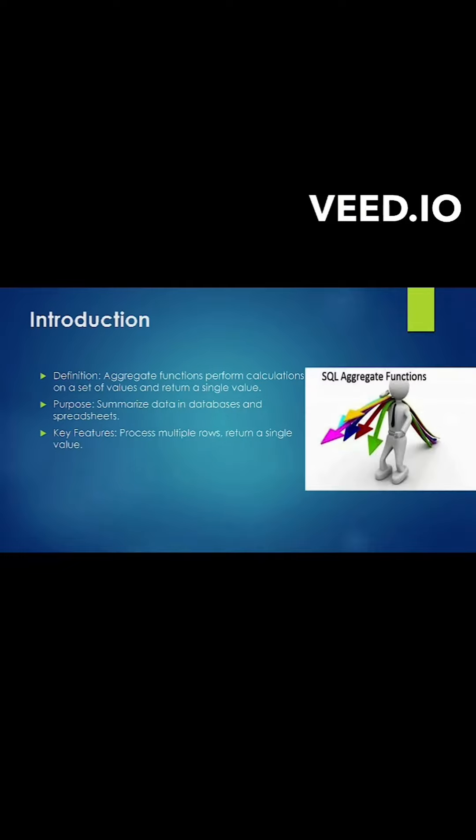Please find the definition of aggregate function. An aggregate function summarizes data from multiple rows into a single row. An aggregate function is like a super tool for numbers in a database.